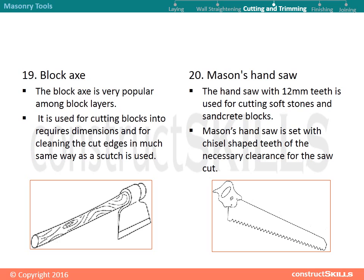Cutting and trimming tools: block axe. The block axe is very popular among block layers. It is used for cutting blocks into required dimensions and for cleaning the cut edges, much the same way as a scutch. Mason's hand saw — the hand saw with 12 mm teeth is used for cutting soft stones and sand grit blocks, set with chisel-shaped teeth for the necessary clearance for the saw cut.